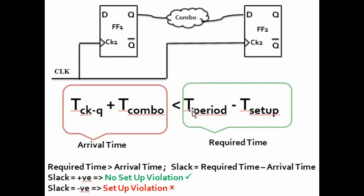This equation is nothing but the setup time equation. T period minus T setup is our required time — within this time the data should arrive — and T clock-to-Q plus T combinational is the arrival time. For setup to meet, required time should be greater than the arrival time; if this is the case there is no setup violation. Slack is basically required time minus arrival time. If slack is positive, required time is greater than arrival time and there is no setup violation. But if slack is negative, it means data is taking more time to arrive than the required time, so there is a setup violation.